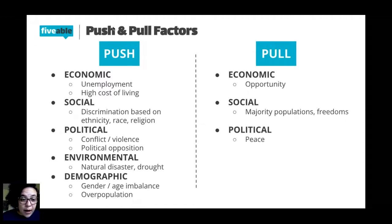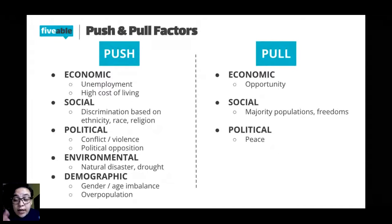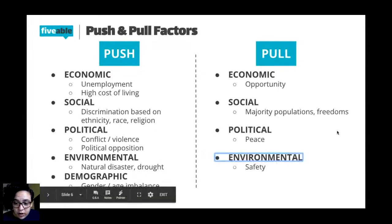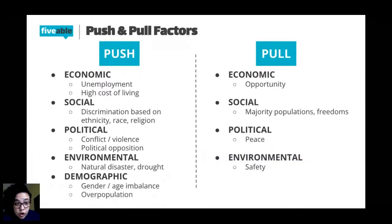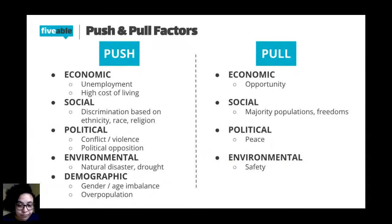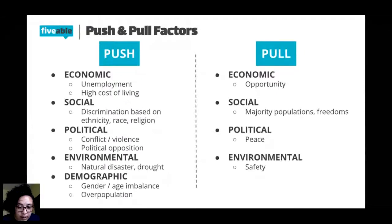Political pull factors include peace. If you live somewhere with a war, you just need to find a place without conflict — you don't have to go far, just somewhere not in conflict. People in Syria, for example, are moving to peaceful places. Environmental pull factors include safety: if you're in a hurricane's path you need to get out, so people in southern Florida are migrating north temporarily. They may go back home, but they have to get out of the path first.